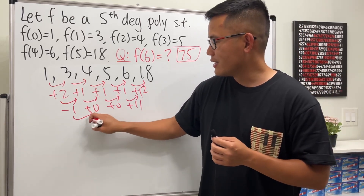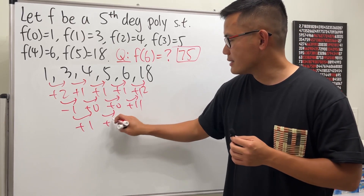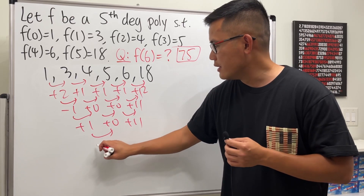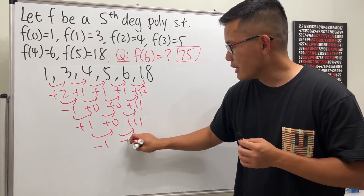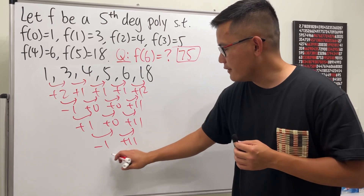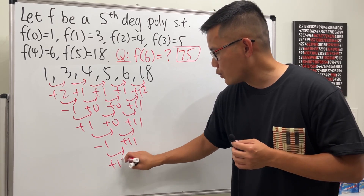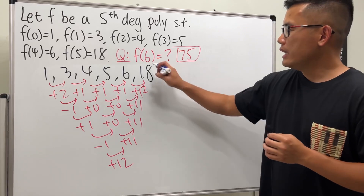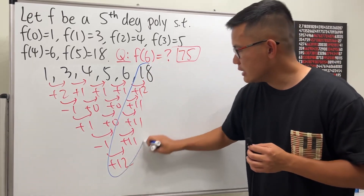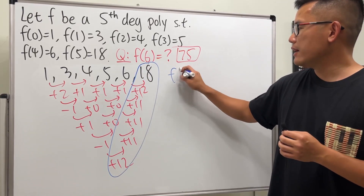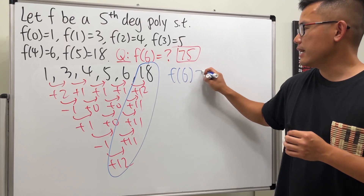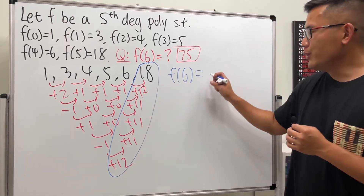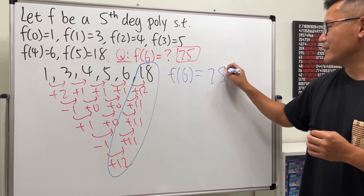And then keep on going. From here to here it's plus 1, plus 0, and then plus 11. And then from here to here is minus 1, and then plus 11, and you see that from here to here is plus 12. How are we going to use these numbers? We just have to add all these numbers right here and we'll get f(6). If you do this plus this, that's 30, and then adding that all together, you will end up with 75.